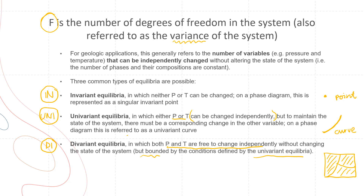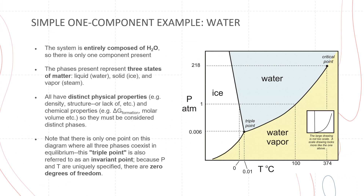Let's have a look at some examples. Here we have a simple one-component example — water. This system is entirely composed of H2O, and the phases represent the three states of matter: liquid water, solid ice, and gas or steam. All of these have distinct physical properties, so they must be considered as distinct phases. There are three phases here.